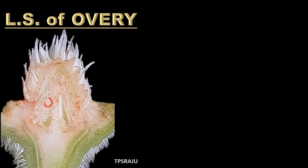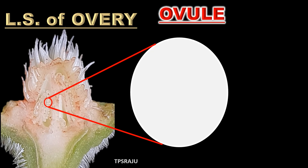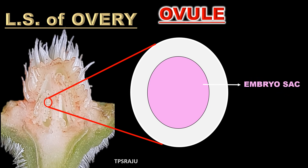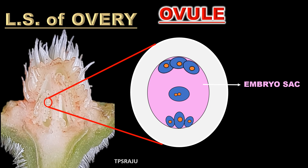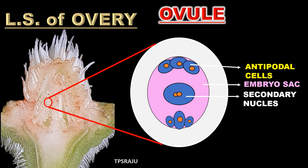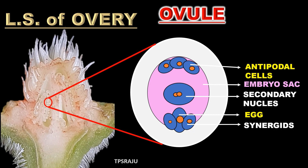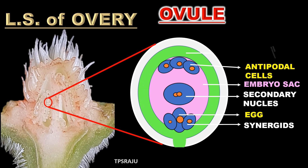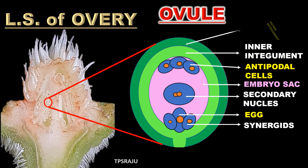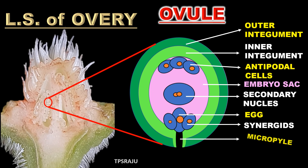Before learning the process of fertilization, we must know the structure of the ovule. At the center of the ovule there is a sac-like structure called the embryo sac. In the embryo sac there are seven cells arranged in three groups: antipodal cells, secondary nucleus, egg cell, and synergids. The embryo is surrounded by two integuments — inner integument and outer integument — which leave a small pore called the micropyle.